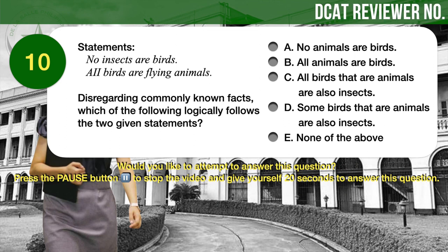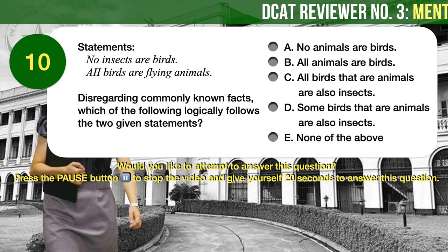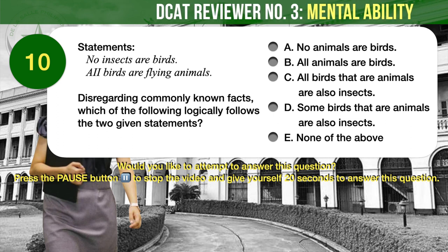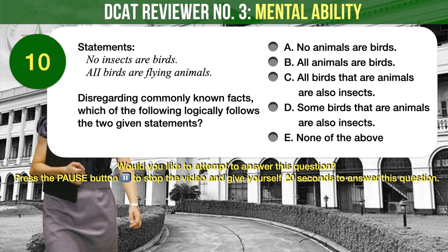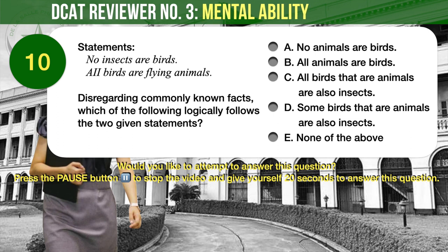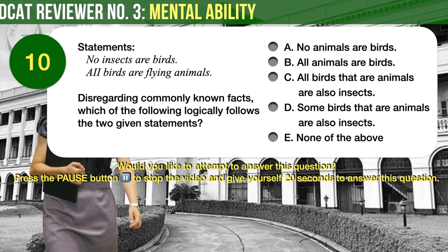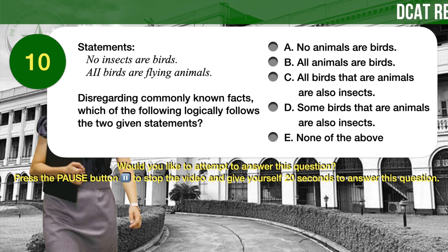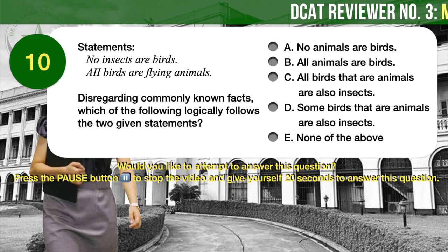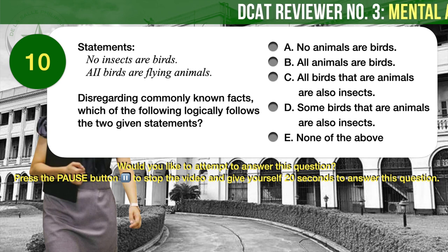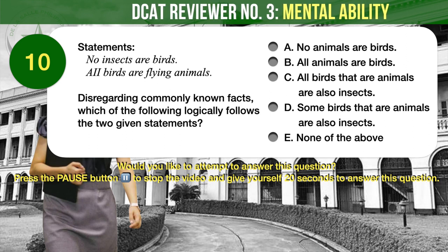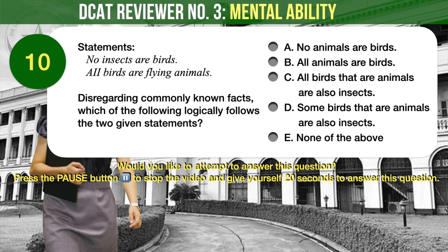Question number 10. Given two statements: Statement 1 — No insects are birds. Statement 2 — All birds are flying animals. Disregarding commonly known facts, which of the following logically follows? A: No animals are birds. B: All animals are birds. C: All birds that are animals are also insects. D: Some birds that are animals are also insects. E: None of the above.